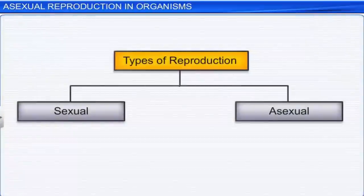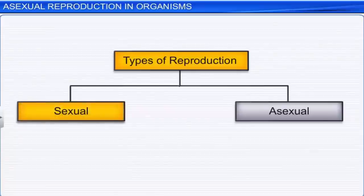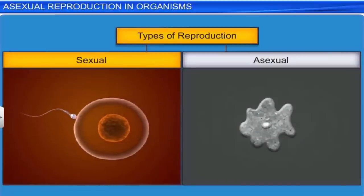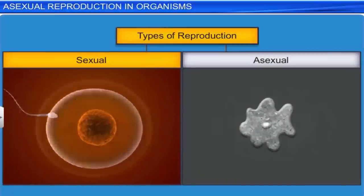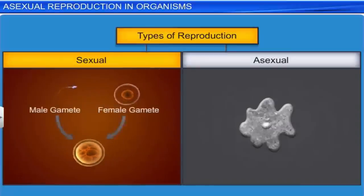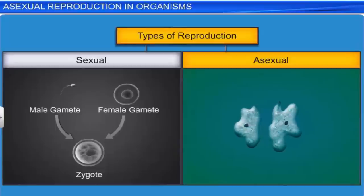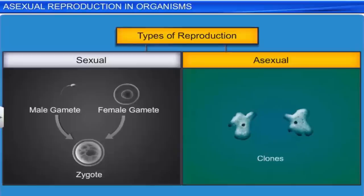In living organisms, we see two types of reproduction: sexual and asexual. In sexual reproduction, a gamete from the male parent fuses with a gamete from the female parent to form a zygote. However, in asexual reproduction, the organism or the parent cell divides to give rise to morphologically and genetically identical organisms called clones.